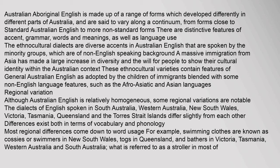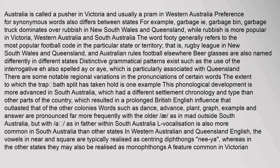What is referred to as a 'stroller' in most of Australia is called a 'pusher' in Victoria and usually a 'pram' in Western Australia. Preference for synonymous words also differs between states — for example, 'garbage' dominates over 'rubbish' in New South Wales and Queensland, while 'rubbish' is more popular in Victoria, Western Australia and South Australia. The word 'footy' generally refers to the most popular football code in the particular state or territory — rugby league in New South Wales and Queensland, and Australian rules football elsewhere.